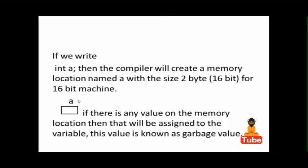For that, the compiler will create a memory location named 'a' with size 2 bytes for 16-bit. Here you can see it. If there is any value on the memory location, that will be assigned to the variable.